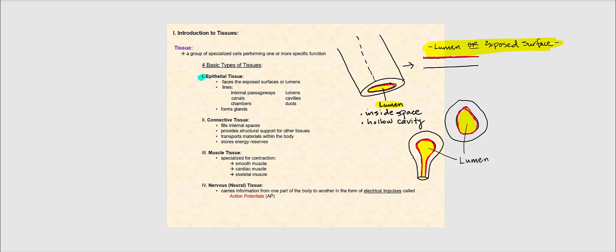We have epithelial tissue, connective tissue, muscle tissue, and nervous tissue, which could also be referred to as neural tissue. In lab, if you are being asked to identify or name the basic or general tissue type, then you should be answering one of these four — epithelial tissue, connective tissue, muscle tissue, or nervous tissue.